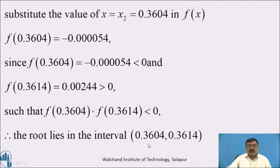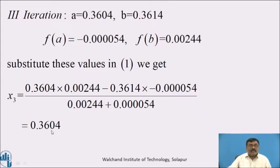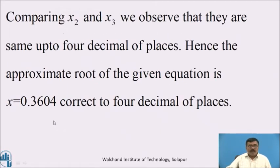Therefore, the root lies in the interval [0.3604, 0.3614]. Third iteration: here a = 0.3604 and b = 0.3614, and f(a) = −0.0000054 and f(b) = 0.00244. Substituting these values in equation 1 and simplifying, we get x₃ = 0.3604. Comparing x₂ and x₃, we observe that they are the same up to 4 decimal places. Hence, the approximate root of the given equation is x = 0.3604, correct to 4 decimal places.